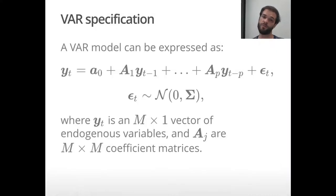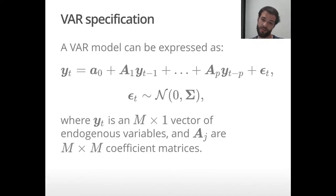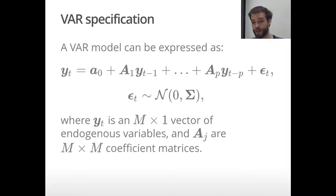The specification of a VAR model looks as follows. The thing to note here is that the vector of dependent variables Y_t also appears on the right hand side in a lagged form, and you have A_j which are m by m coefficient matrices.